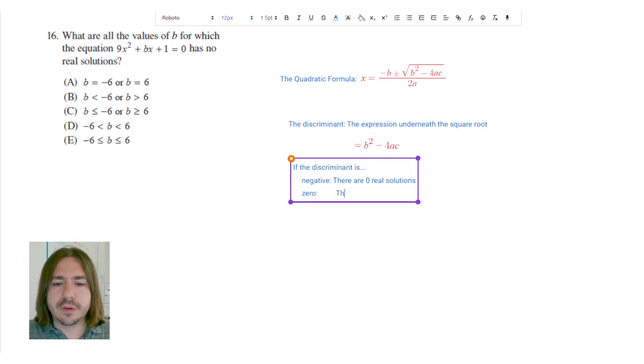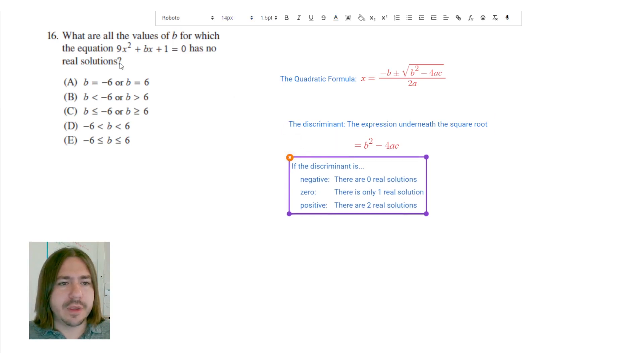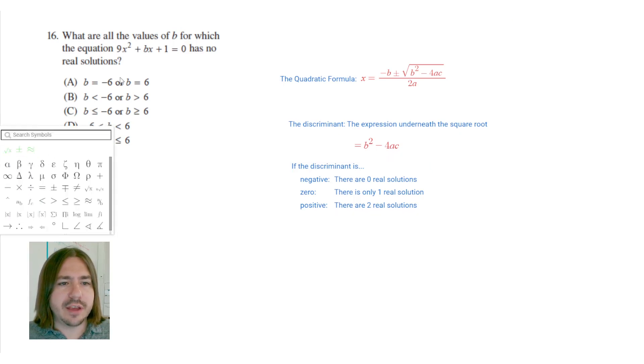So let's look back at the problem that we have here. 9x squared plus bx plus 1. So in this case, we're going to say that our a value is 9. That's the coefficient to x squared. We can say that the b value is just b. We don't know what that is. That's what we're trying to figure out. And we can say that the c value is 1. So if we're going to calculate the discriminant, we're going to have b squared minus 4 times 9 times 1.